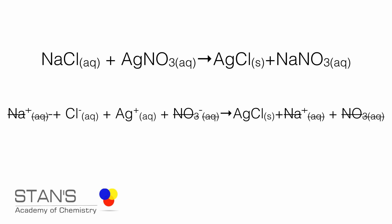If you cancel out the common terms or cross out the common terms on both sides, what remains would be Ag+ plus Cl- equals gives you silver chloride.